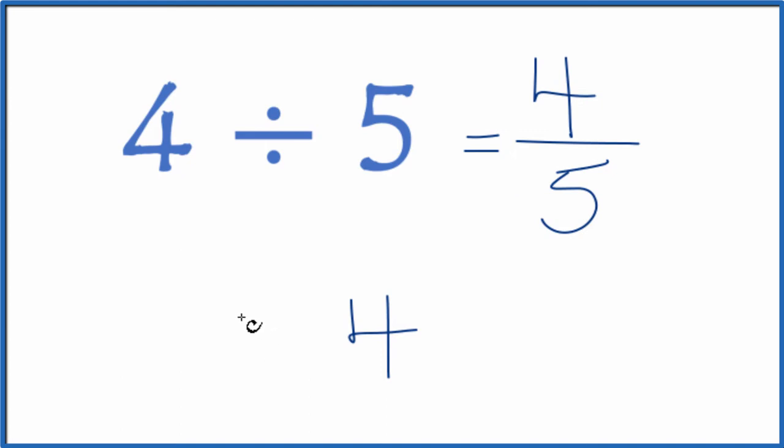We have 4, and we want to know how many times 5 will go into 4. 5 doesn't go into 4, so we'll put a 0 and a decimal point. Now we can call this 40.